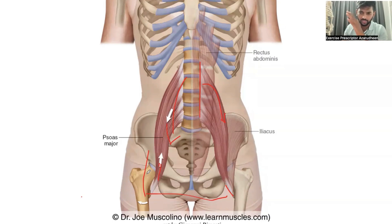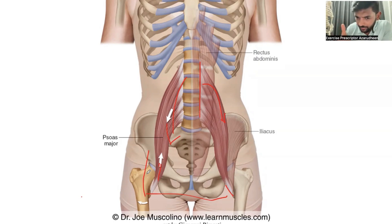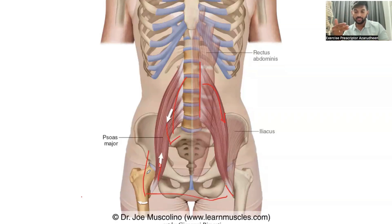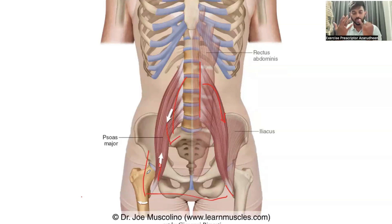Quick summary — what are all the functions of psoas major? Hip flexion, external rotation of the hip. Unilateral contraction: lateral flexion of the trunk. Bilateral contraction: flexion of the trunk. And in the pelvis — proximal pull creates posterior pelvic tilt. So how many functions have we created so far?